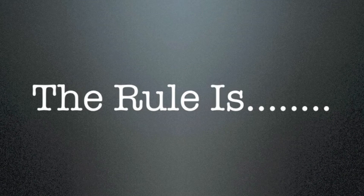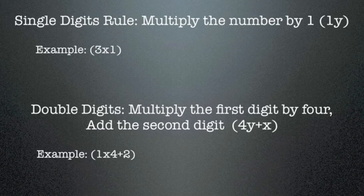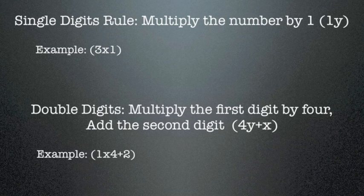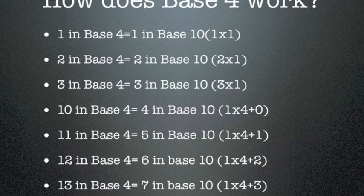The rule is: single digits — multiply the number by one. The equation is one times y. Example: three times one. Double digits — multiply the first digit by four, then add the second digit. The equation is four times y plus x. Example: one times four plus two.